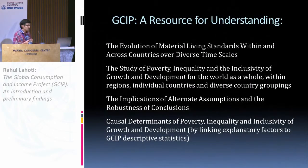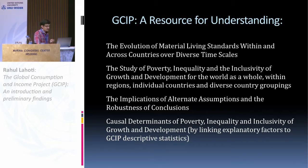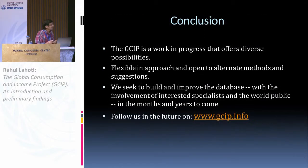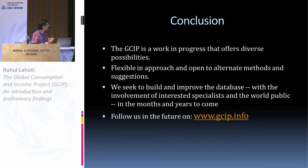In short, GCIP is a resource for understanding the evolution of material living standards within and across countries. It is a tool that can be used to study poverty, inequality, inclusiveness and growth, the implications of alternative assumptions, and causal determinants of poverty and inequality. This is very much a work in progress that offers diverse possibilities. We plan to be flexible in our approach and open to alternative methods and suggestions. We seek to build and improve on this database in the months and years to come with involvement of interested specialists and the world public. You can follow us at GCIP.co. Thank you.